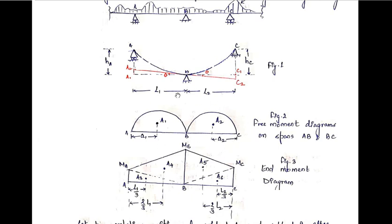For the end moment diagram, we find the values of moments at A, B, and C, plot the points MA, MB, and MC, and join them with straight lines. The diagram obtained by joining the support moments with straight lines is the end moment diagram. Between A and B, and between B and C, this diagram has a trapezium shape, which we can divide into two triangular parts with areas a3 and a4.